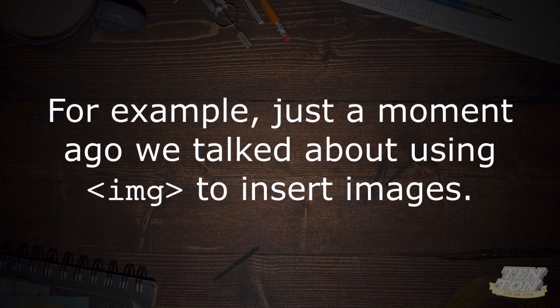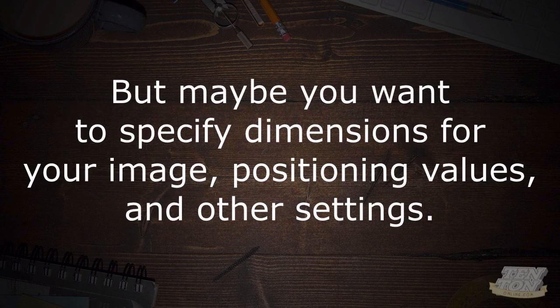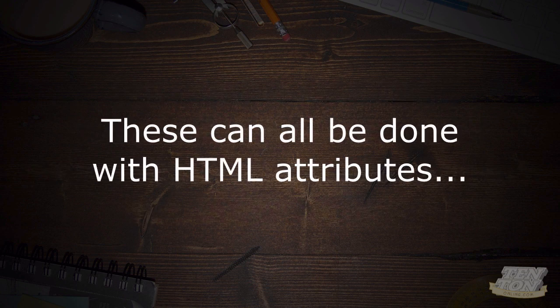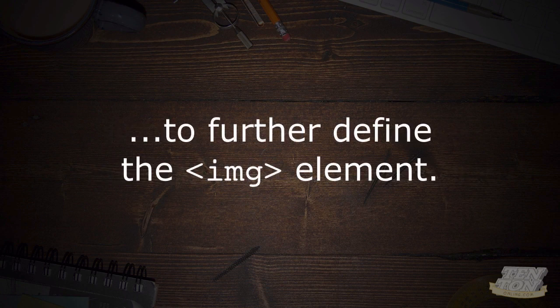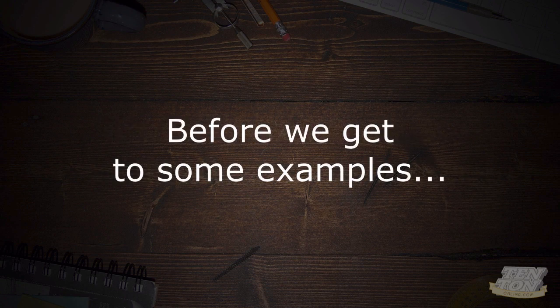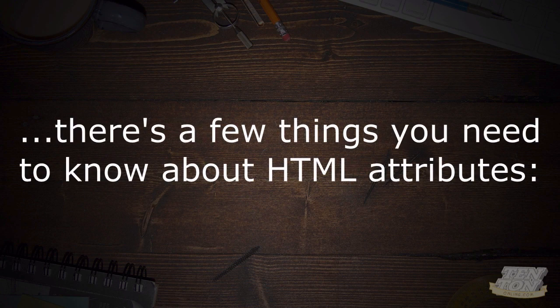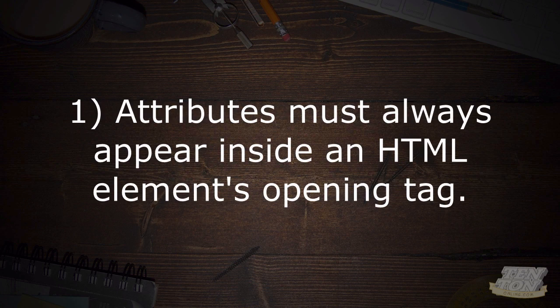For example, with the image element you might want to specify dimensions, positioning values, and other settings — this can all be done with HTML attributes to further define the image element. Now, there are five things you need to know about HTML attributes. Number one: attributes must always appear inside an HTML element's opening tag. Always.